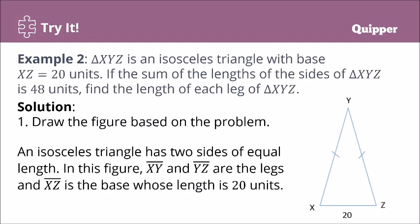Let's draw the figure. This is the figure — it's an isosceles triangle. Dalawang sides niya ay equal. Ang base niya ay 20 units, as given in the problem. We are asked to find the length of each leg. Line segment XY is the first leg; the second leg is line segment YZ. These are the legs of the isosceles triangle.